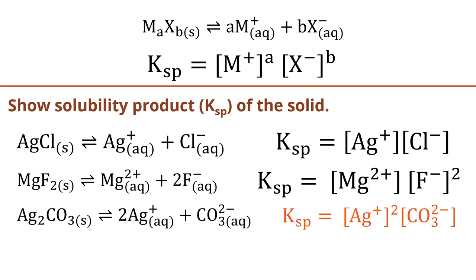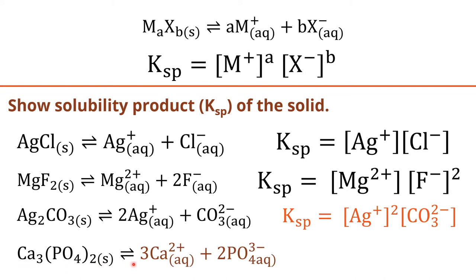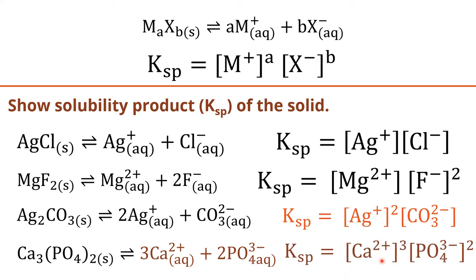The Ksp for silver carbonate should be concentration of Ag⁺ raised to 2, multiplied by concentration of CO₃²⁻ raised to 1. For calcium phosphate, it separates into 3 moles of Ca²⁺ and 2 moles of PO₄³⁻. The Ksp would be concentration of Ca²⁺ raised to 3, multiplied by concentration of PO₄³⁻ raised to 2. This is knowledge from last semester — you must know the charge of the cation and anion, and be able to balance equations and derive Ksp.